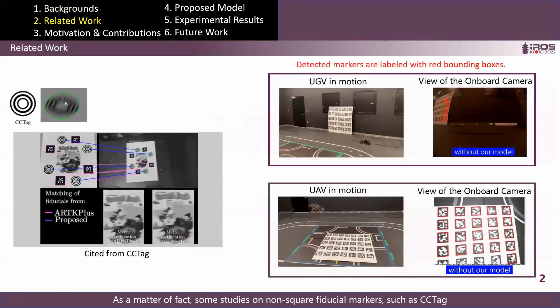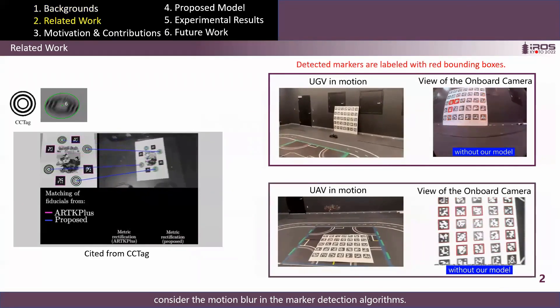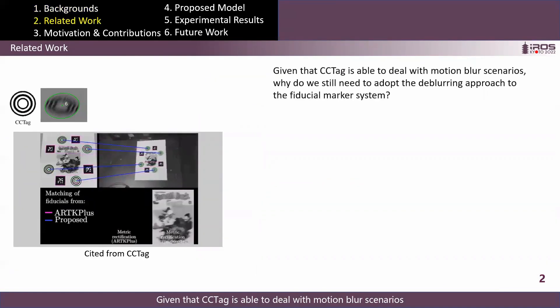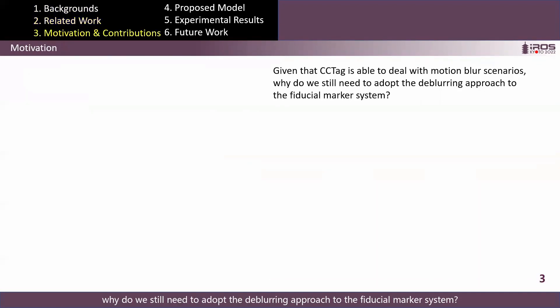As a matter of fact, some studies on non-square fiducial markers, such as CCTag, consider motion blur in the marker detection algorithms. Given that CCTag is able to deal with motion blur scenarios, one may ask, why do we still need to adopt the deep learning approach to the fiducial marker system?